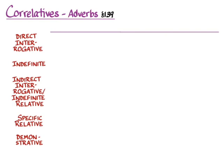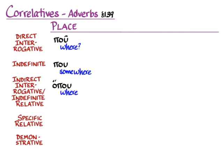Greek also has correlative adverbs talking about place. We can ask pou, meaning 'where?' And the indefinite form is pou (enclitic), 'somewhere.' Note that pou can also be a particle meaning 'I suppose,' but that's not what we're covering here. The indirect interrogative is hopou, for 'where': 'she asks where we were going.' The indefinite relative use is 'wherever': 'we're going wherever we want.' The specific relative — not in Hanson and Quinn — is hou. And the demonstrative is ekei, meaning 'there' or 'in that place.'